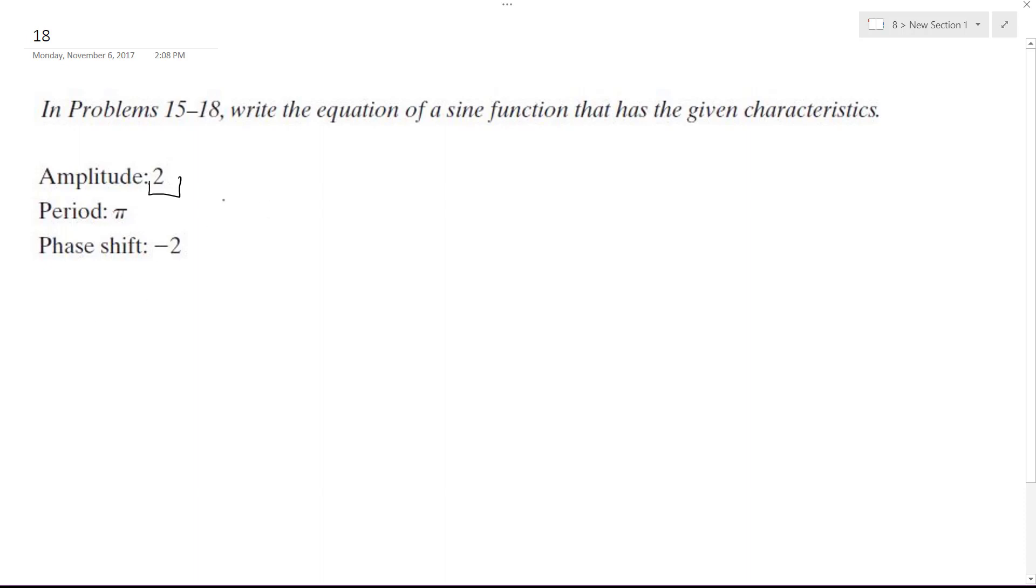Period's going to be equal to two pi divided by omega, which in this case we were given the period so it's pi, so I'm going to multiply, so I get omega pi is equal to two pi, and divide by pi. So omega in this case is going to be equal to two.